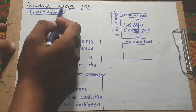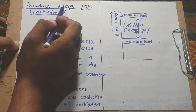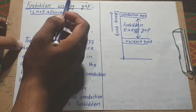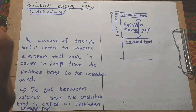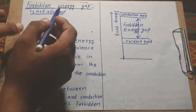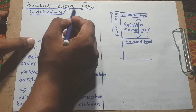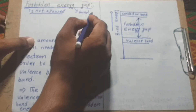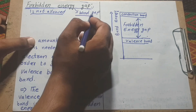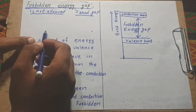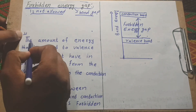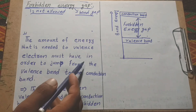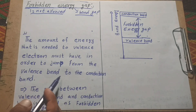Now, energy gap: the difference between the valence band and conduction band is known as energy gap. Energy gap is also known as band gap. The band gap is the amount of energy that valence electrons must have in order to jump from the valence band to the conduction band.